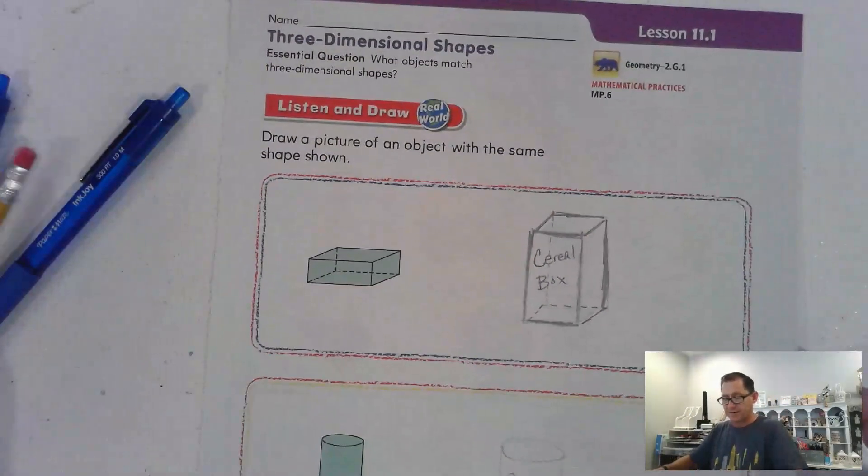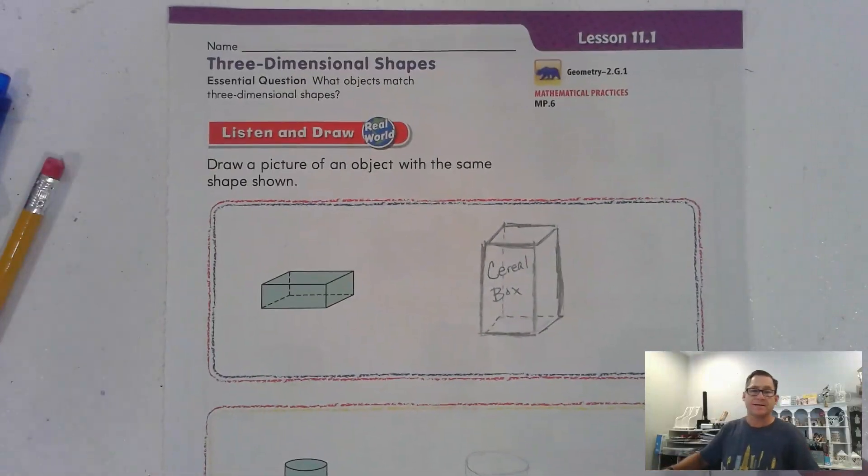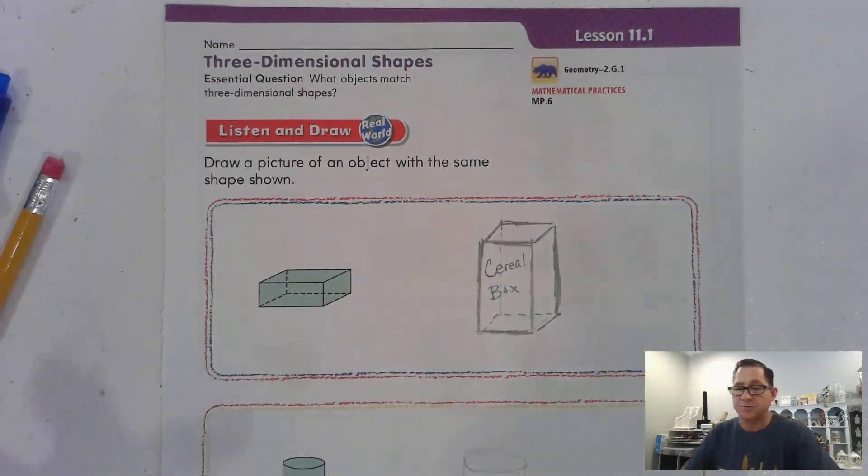Hello everybody. So today we're going to start our last chapter in the second grade GoMath textbook. And today we're working with three-dimensional shapes. We're on page 521 of the second grade GoMath textbook. So what objects match three-dimensional shapes?